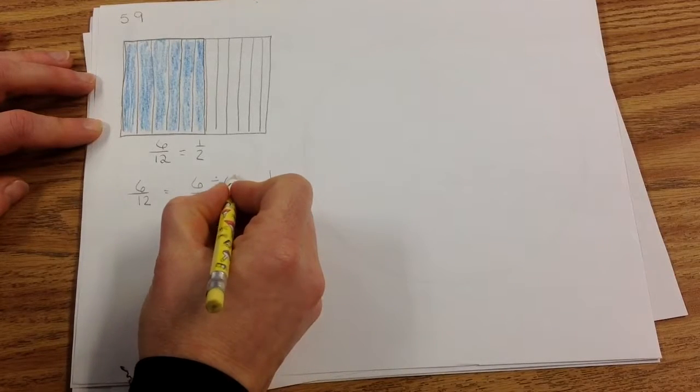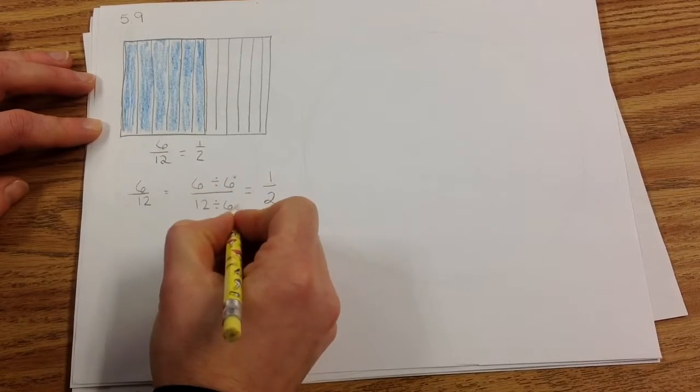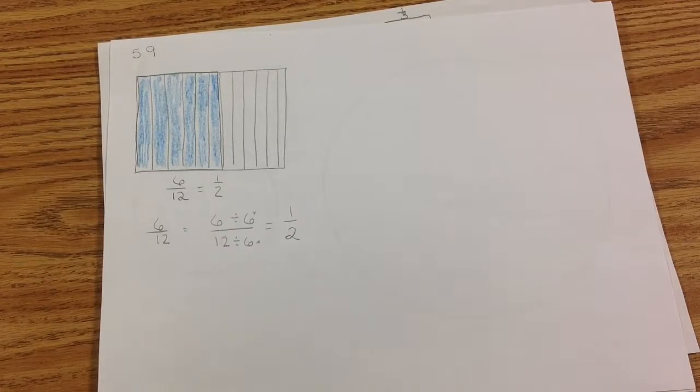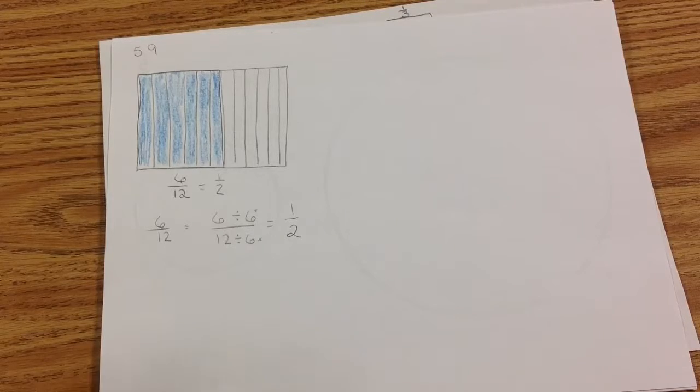Just like with multiplication, what you do to the top, you must do to the bottom. What I would like you to do now is I'd like you to draw an area model, not a tape model, an area model like this, to represent 2 eighths. Pause while you do it.